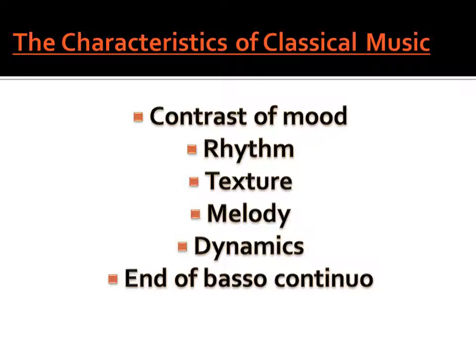These instruments made classical music sound new and different. But the elements of music also changed during the classical period because of the new audience base of the middle class, the rise of the amateur musician, and the loss of power of the aristocracy, the church, and the patronage system. The Enlightenment, the revolutions happening — all of these created new ways to use the elements of music because the audience demanded new sounds. The characteristics we'll discuss are contrast, mood, how rhythm was used, texture, melody, dynamics, and the end of the basso continua.